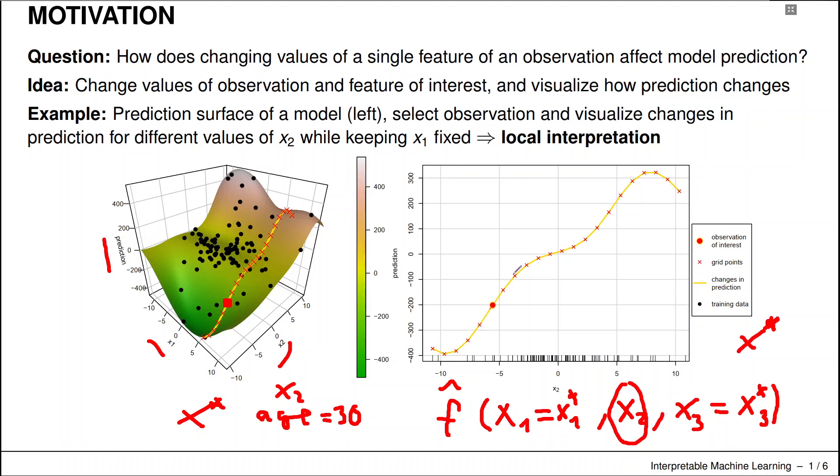This gives rise to these local effect interpretations. It kind of gives you a counterfactual, what-if perspective—what would happen if I change the feature value of that specific feature age under consideration.